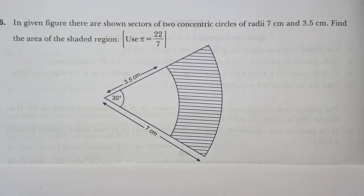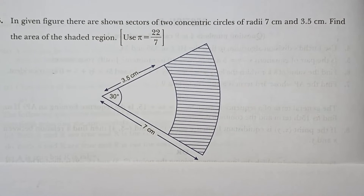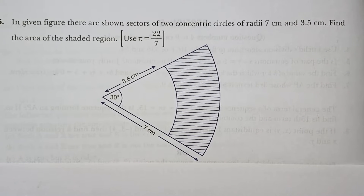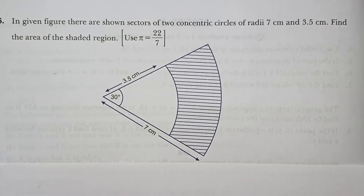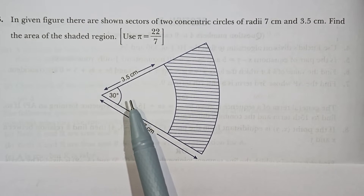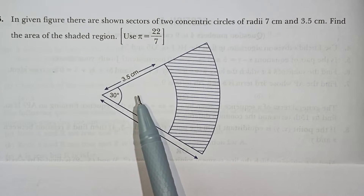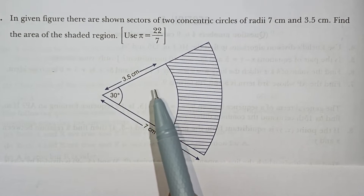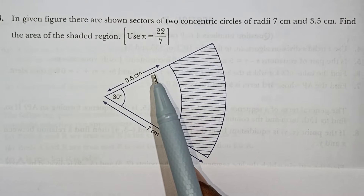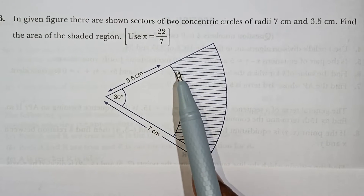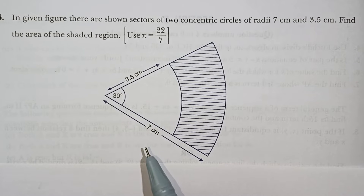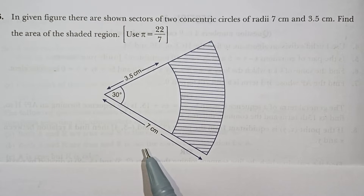Hi students. In this video, we are looking at the area related to circles. In the given figure, there are shown the sectors of two concentric circles of radius 7 cm and 3.5 cm. Find the area of the shaded region. We will use pi value 22 by 7.